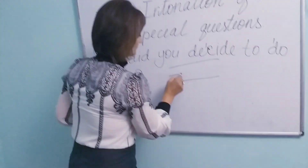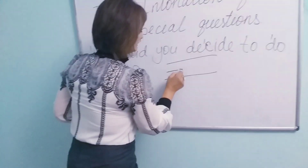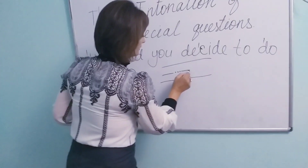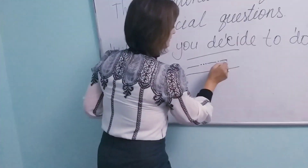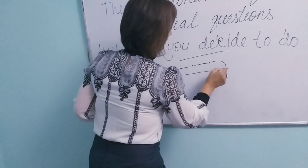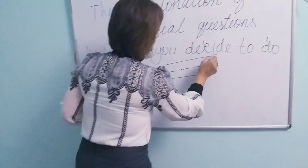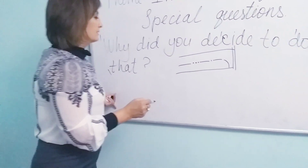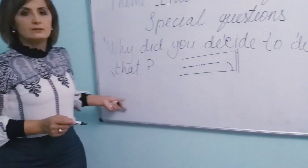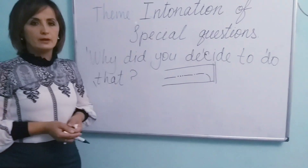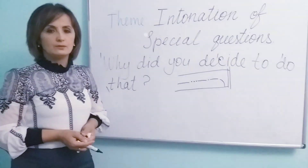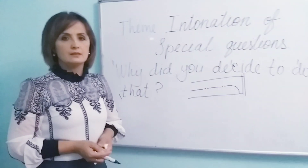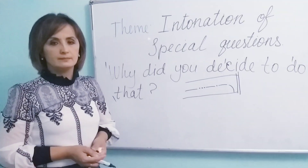Let's intone it according to those stress marks: 'Why did you deCIDE to do THAT?' At the end we should close the intonation group with two vertical lines. 'Why did you decide to do that?' So repeat after me please: 'Why did you decide to do that?'